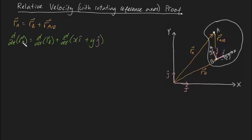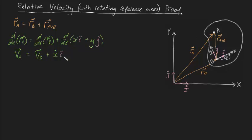Let's go through the differentiation. d/dt of R_A differentiates into the absolute velocity of point A, and d/dt of R_B differentiates into the absolute velocity of point B. These differentiate nicely because we're dealing with positions relative to a fixed reference frame. But the term d/dt of (xi + yj) won't differentiate so nicely because our unit vectors i and j change with respect to time. So we need to apply the chain rule.